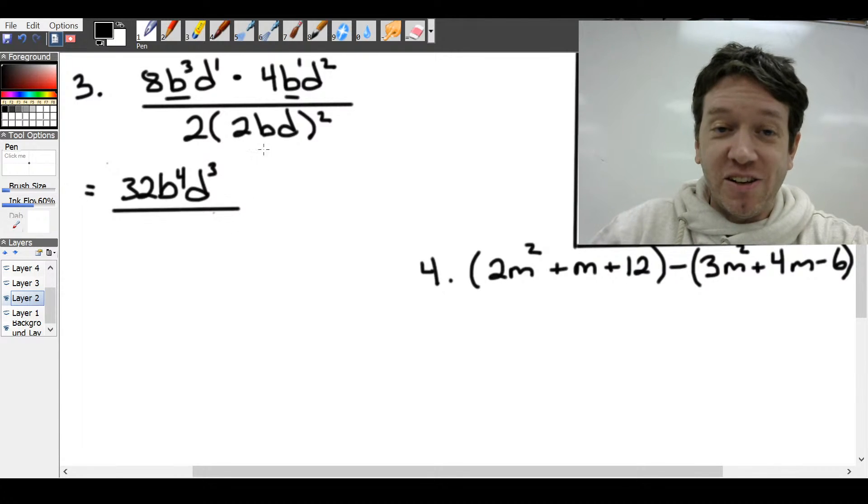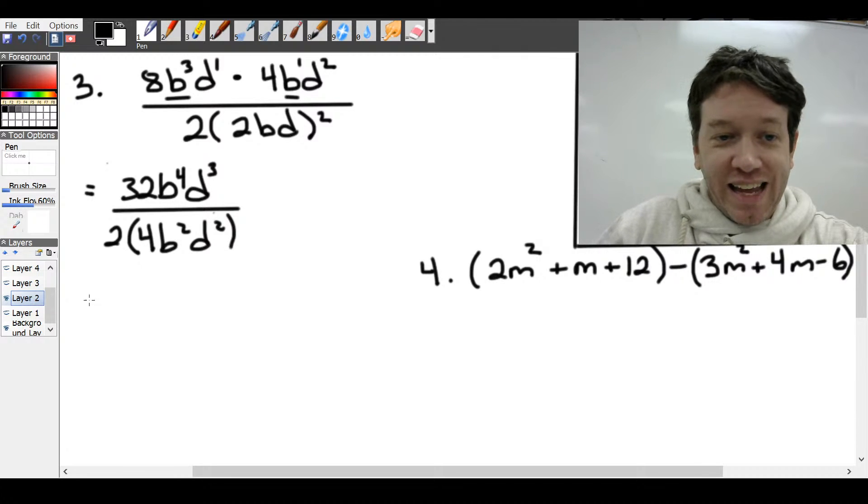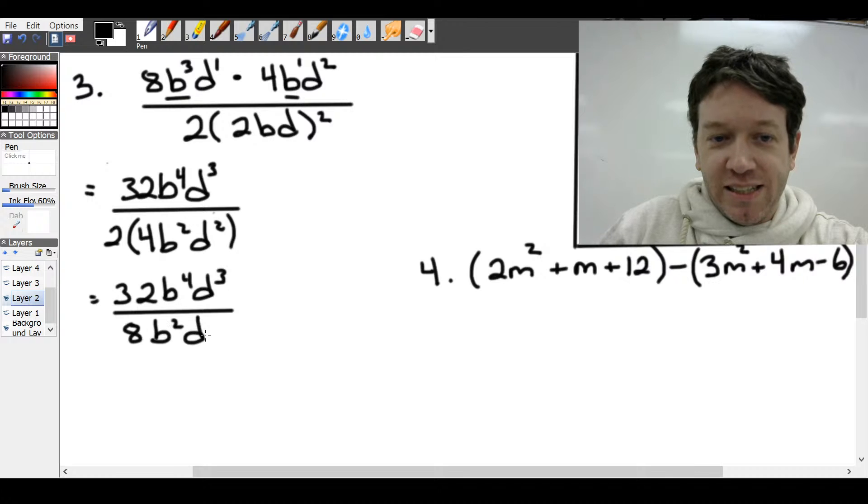Now, in our denominator, we need to follow BEDMAS. We have to take this exponent before we distribute that 2 into the brackets. Let's leave that 2 out. And if we square everything in the bracket, we get 2 squared is 4, b squared, d squared. Then we can multiply that 2 in. So let's just leave the numerator as is. And our denominator becomes 2 times 4, which is 8, b squared, d squared.